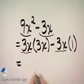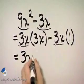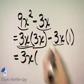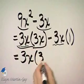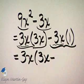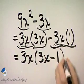So we're factoring out the common factor of 3x. When we factor it from this first term, we have left 3x minus when we factor it from this second term, we have left 1.